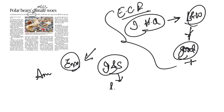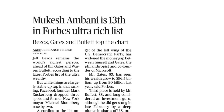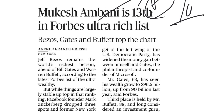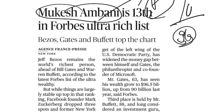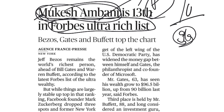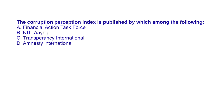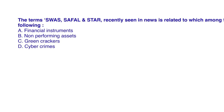The next article — 'Mukesh Ambani is 13th in Forbes Ultra Rich List' — is not much important from a UPSC prelims point of view, but may be useful for Group 1 or Group 2 exams. Just note that Mukesh Ambani is ranked 13th on the Forbes Ultra Rich List. Today's prelims questions: the Corruption Perception Index is published by which organization? And the terms SWAS, SAFAL, and STAR recently seen in news are related to which of the following? Try to answer these, and in tomorrow's video we will see the explanation. Thank you.